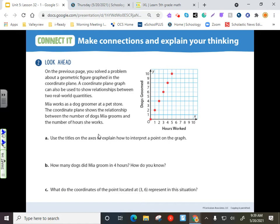So, let's read over the problem and see what we can do with this information. On the previous page, you solved a problem about a geometric figure graphed in the coordinate plane. That figure was a square. But a coordinate plane could be used to show relationships between two real-world quantities. Quantities is the amount of something. So, Mia works as a dog groomer at a pet store. The coordinate plane shows the relationship between the number of dogs Mia grooms, that's y, and the number of hours she works, and that is her x-axis. Use the titles of the axes to explain how to interpret the point on the graph. So, those titles can tell us that x equals hours worked, and the y-axis tells you dogs groomed. If you're not aware of what dog grooming is, it's just where they clean up your dog and clean up their nails and make them look nice and neat.